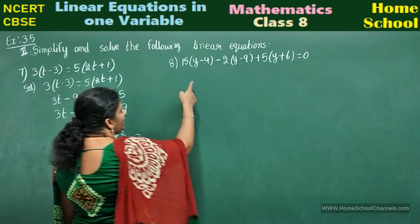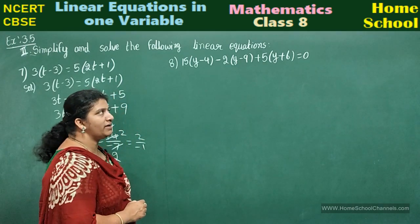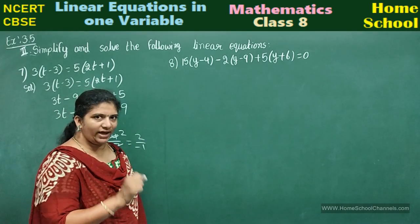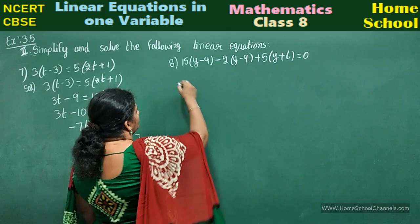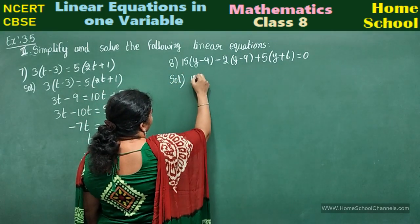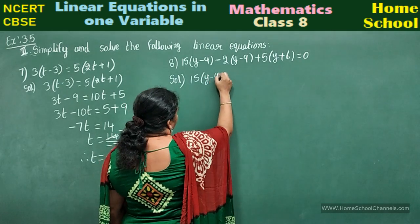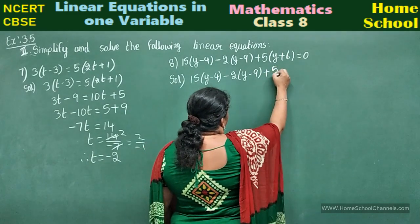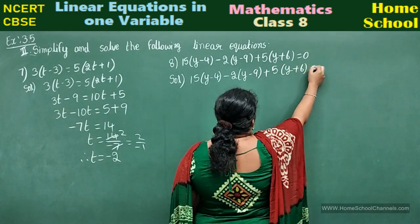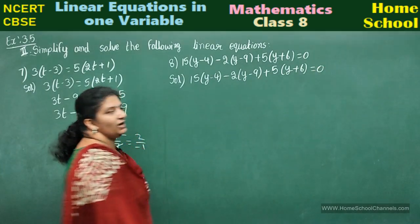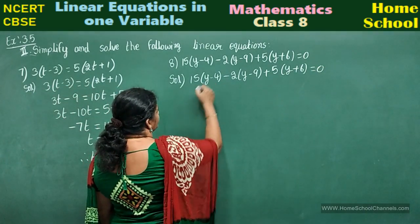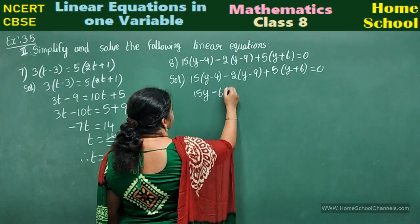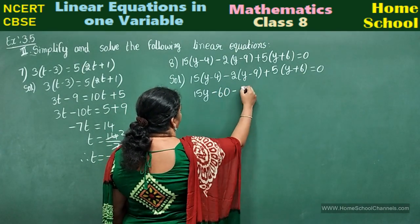Next problem, eighth one: 15(y - 4) - 2(y - 9) + 5(y + 6) = 0. Here the variable is y. Find the value of y. Start writing the solution. 15(y - 4) - 2(y - 9) + 5(y + 6) = 0.